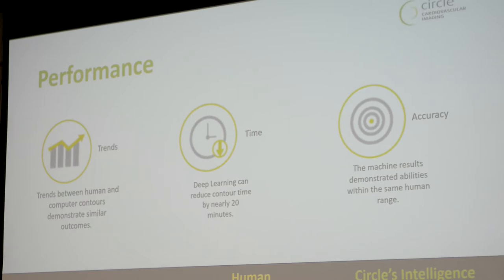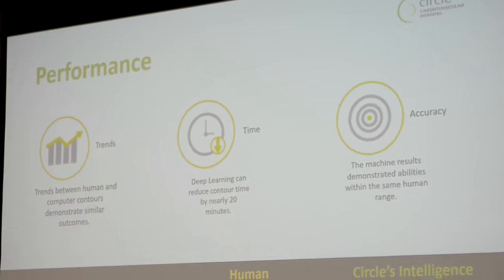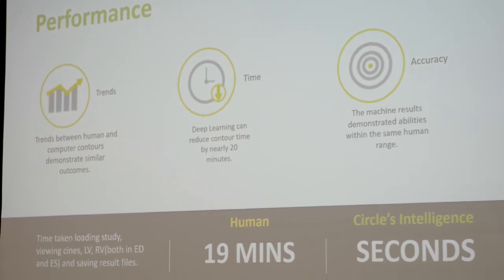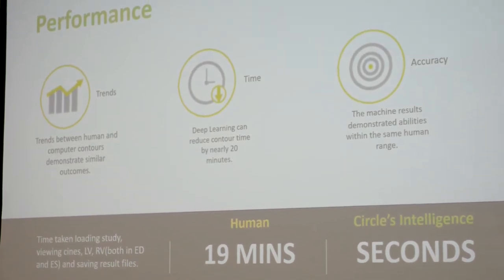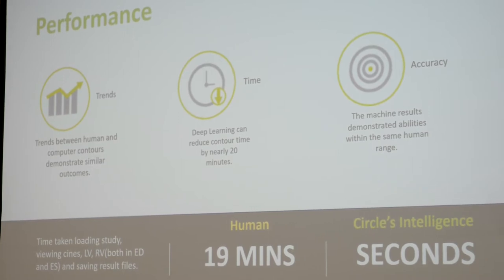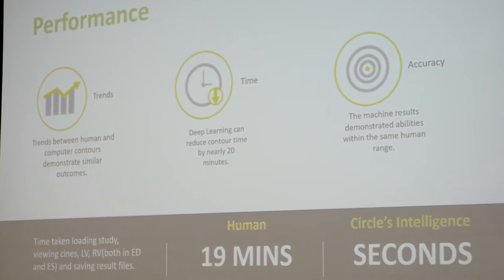So we trained an algorithm whose accuracy trends show similarity to a human being. The gain is that it is accurate, there is no intra-observer variability, and because it is trained on one standard operating procedure, it will follow that procedure all the time — unlike technicians where one might miss a basal slice and another might miss an apical slice. The machine always does what it has learned. In terms of timing, what I talked about was around 19 minutes for the expert to contour 20 slices of images, and for the machine it takes only seconds.